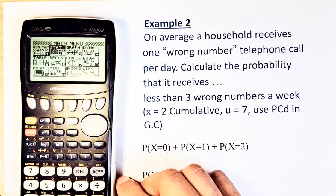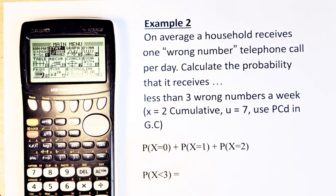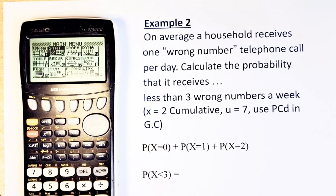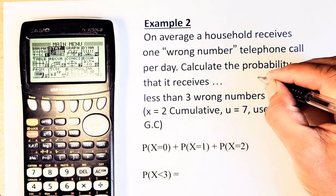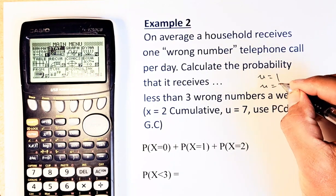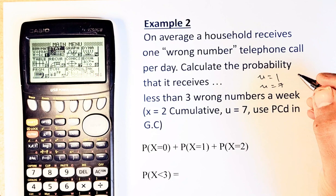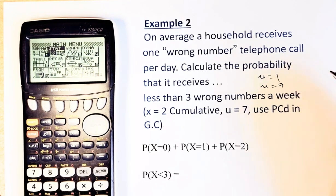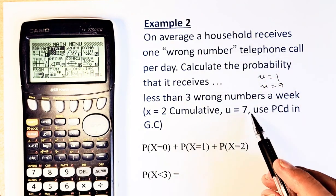On average, a household receives one wrong number telephone call per day. Calculate the probability that we receive less than three wrong numbers a week. If the μ is one per day, so if you want to do per week, μ becomes seven, because one day is one, a week becomes seven. So that's why your μ = 7.